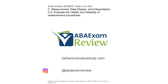Welcome back to ABA Exam Review and the continuation of our 6th Edition BCBA task list series. Today we're continuing measurement, data display, and interpretation with validity and reliability. When we talk about data, we're really looking for four ideas: accurate data, valid data, reliable data, and data that has inter-observer agreement. Today we're going to be discussing validity and reliability of our data and measurement procedures, what they mean, and how they're going to help you become a better analyst and pass your exam.